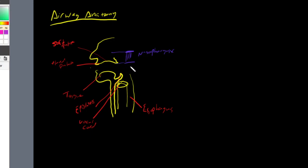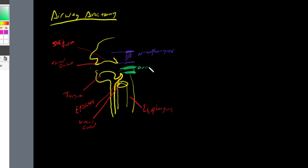The region just under that is going to be called your oropharynx. Your oropharynx is a structure that starts at the base of the tongue, and it is going to go from there all the way to the epiglottis. This is effectively our oropharynx.